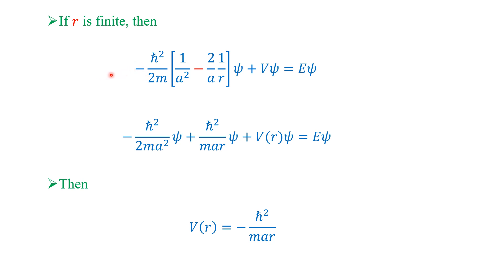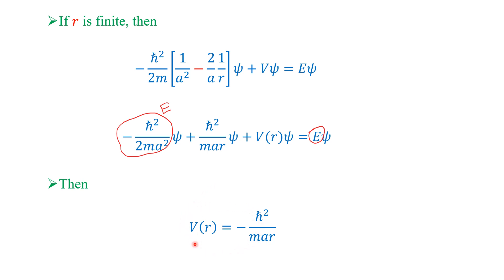We have seen the energy eigenvalue for r→∞. Now if r is finite, we use the full expression: minus h-cross²/2m times [1/a² - 2/(ar)]·psi plus V·psi equals E·psi. Since -h-cross²/(2ma²) equals E, the E terms cancel, and V(r) equals -h-cross²/(2mar). This is the potential for Part 1. Now we will see the next part.